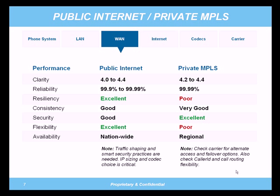There are different reasons for a private connection — a lot of them point to clarity, but clarity is really not the issue based on our testing. We typically see a MOS score in the 4.0 to 4.4 range on the public internet, depending on network setup, and between 4.2 to 4.4 on the private MPLS network. While the private MPLS is slightly better, the human ear — unless you're a major audiophile — isn't going to be able to tell the difference. On the reliability side, MPLS averages a little higher, but both are well within tolerances and industry standards.